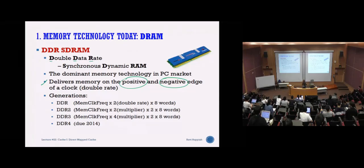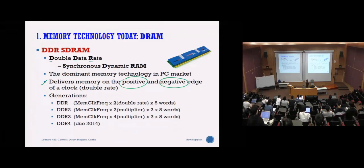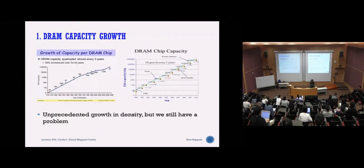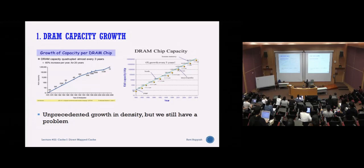20 years ago, the question was how to make SSD a technology deliverable to the common man. Now we have it in all our laptops. Similarly, whatever people are researching now, 10 or 20 years later that will become the new norm. Looking at DRAM chip capacity, you can see around four times growth every three years in how much memory one chip can allocate.